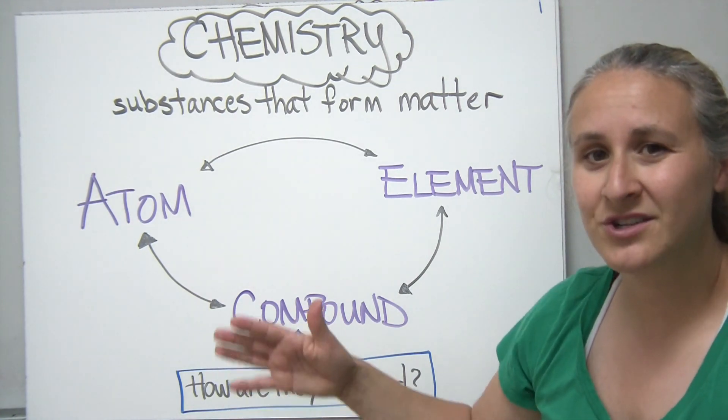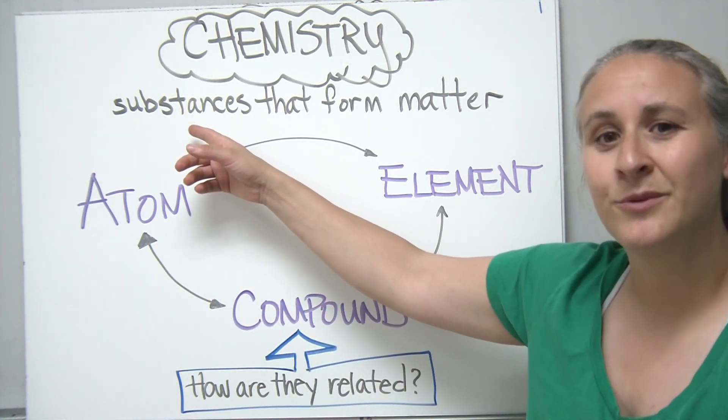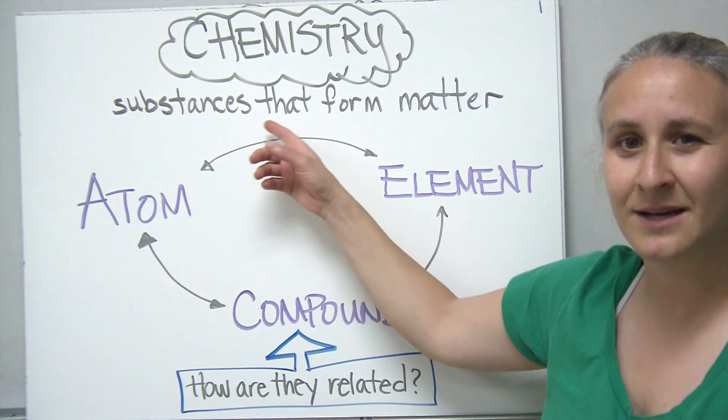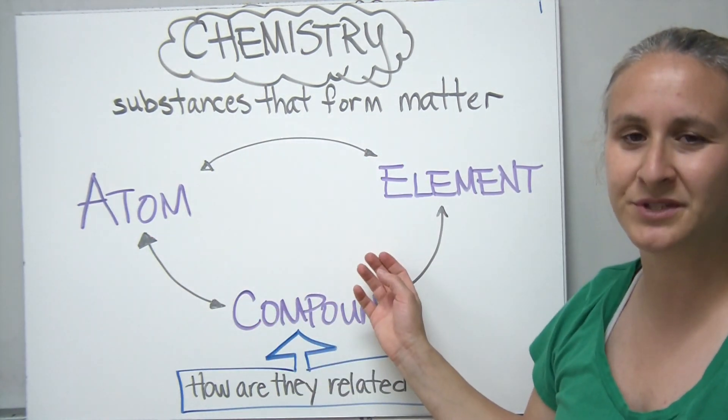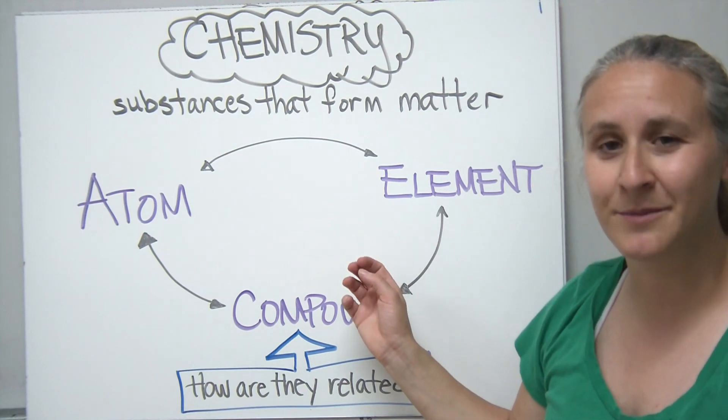So the formal definition of chemistry, we talk about chemical compounds being the substances that form matter. There are three terms that we're going to review today quickly before we get into some of the other things.